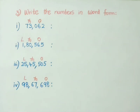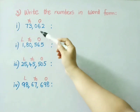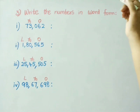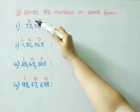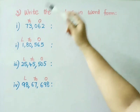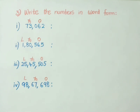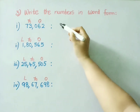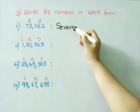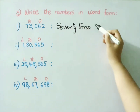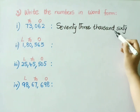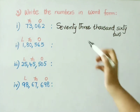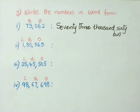Let us see the third sum. Write the numbers in word form. See the first one: 73,062. We place a period after the first 3 digits — the next 2 digits come under the 1000's period. Now, let us write the number name. 73,062 — we have written the word form.